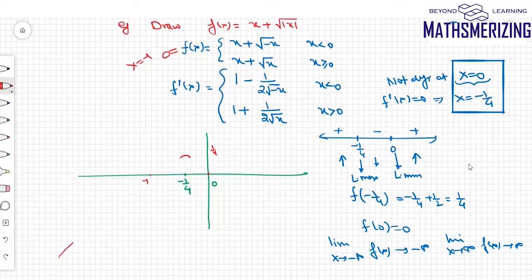So its graph will be starting from minus infinity, it'll take local maximum at minus 1/4. At 0 it is not differentiable. So that is the graph of x plus under root of mod x.